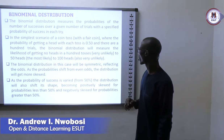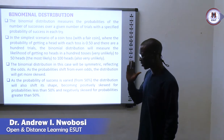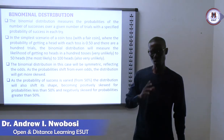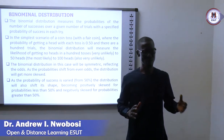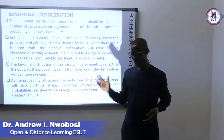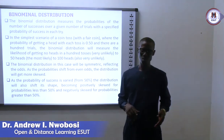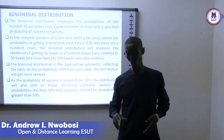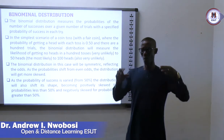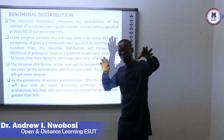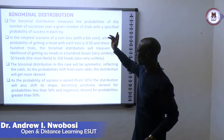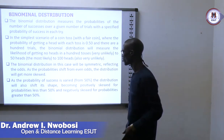Binomial distribution is just a measure of two outcomes. When you talk of binomial distribution, you are talking of two outcomes. It could be positive or negative, it could be male or female, it could be success or failure. So whenever any statistical distribution has only two outcomes, it is classified as a binomial distribution.